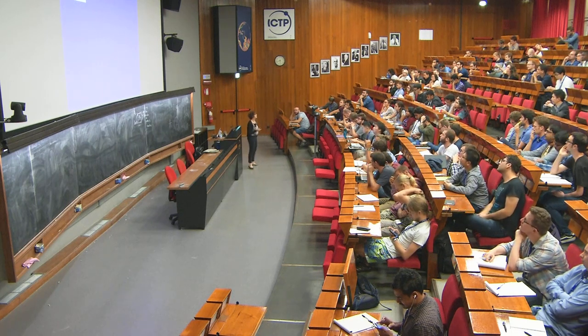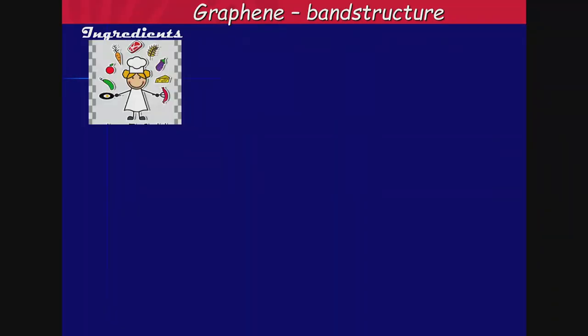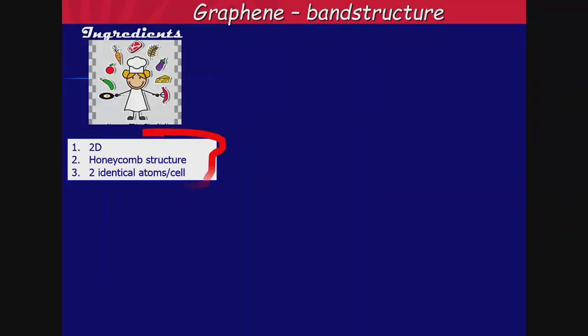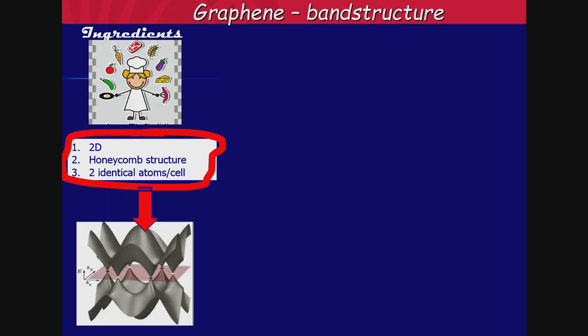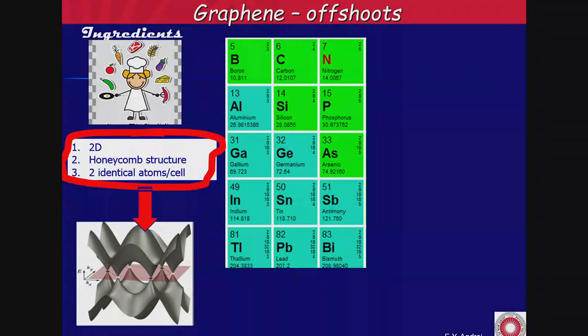Let's remind ourselves what are the ingredients that go into the special band structure of graphene. There are only three ingredients: a two-dimensional honeycomb structure and identical something on every sub-lattice — and this gives you the band structure. Notice that in this list of ingredients, it doesn't say carbon at all. It's purely geometric. So you can go to the periodic table.